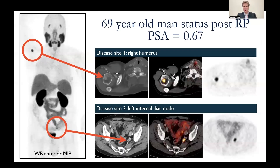This is a case I love and have been showing for years. A patient underwent a radical prostatectomy, had his prostate taken out, and his PSA started to rise — in this case, 0.67. When we imaged him around 2016-2017, a PSA of 0.7 was really low. We imaged him and saw two sites of disease: one in the right humerus and a left internal iliac lymph node.